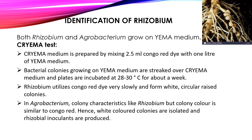Both Rhizobium and Agrobacterium grow on YEMA medium. A special test known as the CREMA test — Congo Red Yeast Extract Mannitol Agar test — is used for identification. This medium is prepared by mixing 2.5 ml of Congo red dye with one liter of YEMA medium. Bacterial colonies are streaked onto CREMA medium and incubated at 28 to 30°C for about a week. Rhizobium utilizes Congo red dye very slowly and forms white, circular colonies, while Agrobacterium absorbs the dye. White-colored colonies are isolated as Rhizobium inoculants.